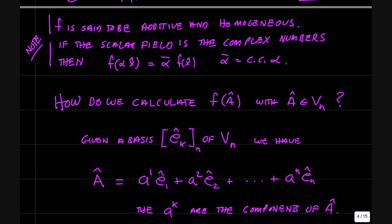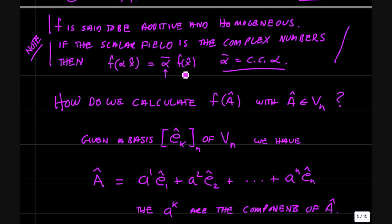You can generalize these functionals to the case of vector spaces over the field of complex numbers. In that case, scalar multiplication is accomplished by factoring out the complex conjugate of alpha — this alpha bar is the complex conjugate of alpha. We won't go into that too much here, but it's easy to extend this idea to spaces over the field of complex numbers.